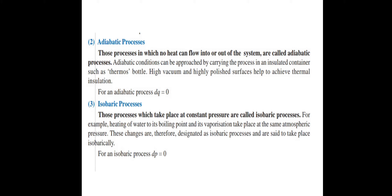The second type is the adiabatic process. Those processes in which no heat can flow into or out of the system are called adiabatic processes. These adiabatic conditions can be approached by carrying the process in an insulated container such as a thermos bottle, where heat cannot enter or escape. High vacuum and highly polished surfaces also help to achieve thermal insulation.